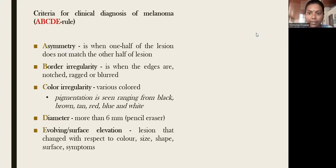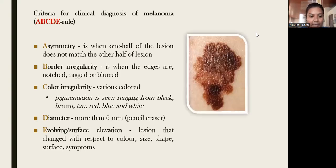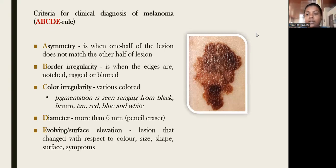The criteria for clinical diagnosis of malignant melanoma is the ABCDE rule. A stands for asymmetry — one half of the lesion does not match the other half. B stands for border irregularity — the edges are ragged or blurred. C stands for color irregularity — within the same lesion there are different colors varying from black to brown, tan, red, blue, and white. D stands for diameter — in malignant melanoma the diameter will be more than 6 mm, approximately the size of a pencil eraser.